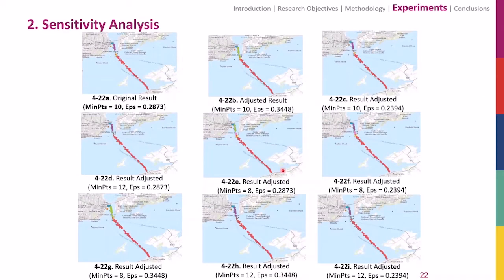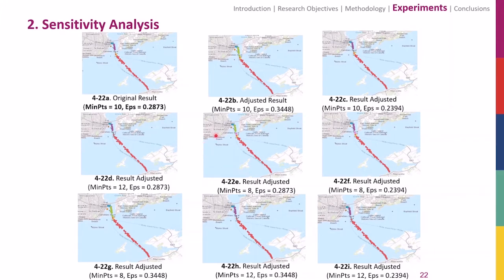This is the sensitivity analysis section to evaluate the validity of the proposed parameter auto-selection method. This experiment applies a set of results with different sets of parameters, analyzing how parameters influence results. The experiment adjusts parameters by 20% up and down separately and applies adjusted parameters to the enhanced DB-SCAN. All results successfully at least partially discovered corresponding clusters and detected outliers. I can conclude that the auto-selection method gives good recommendations with a certain level of tolerance of variation, and can be used in larger-scale big data case studies.